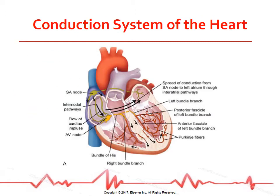The conduction system of the heart consists of specialized neuromuscular tissue located throughout the heart. A normal impulse starts at the SA node in the upper right atrium near the entrance of the vena cava. It spreads over the atrial myocardium via the intra-atrial and internodal pathways, causing atrial contraction. The impulse then travels to the AV node through the bundle of His and down the left and right bundle branches, ending in the Purkinje fibers which transmit the impulse to the ventricles.